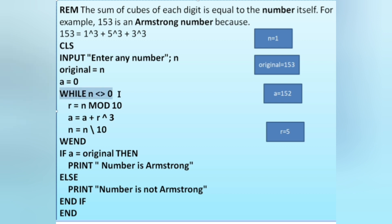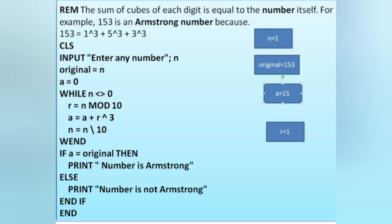Condition check: n = 1, not equals 0, condition is true. r = 1 MOD 10 = 1. Then a = 152 + 1³ = 152 + 1 = 153, so a = 153. Next, n = 1 \ 10 = 0. WEND — the loop goes back and checks: n = 0, 0 not equals 0 is false, so the loop exits.